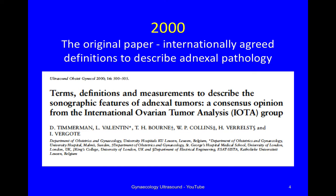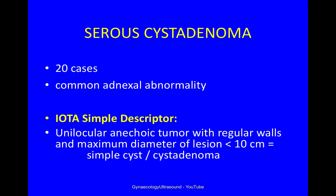The first paper to be published by the IOTA group was in 2000 and it describes terms, definitions and measurements to describe adnexal pathology. I will show you 20 cases of a serous cystadenoma, which is a common adnexal abnormality.